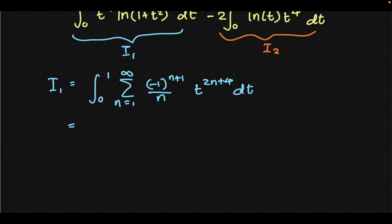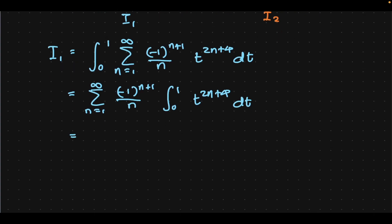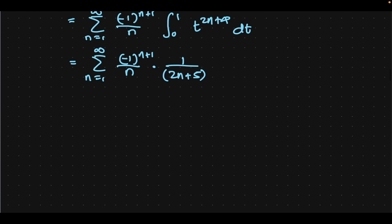There's nothing mysterious going on here — just interchange the sum and integration, and then evaluate. We can take the n dependence out completely, and then sum from n equals 1 to infinity of minus 1 to the n plus 1, over n, times 1 over 2n plus 5. Now we would like to use partial fraction decomposition right here, otherwise evaluating this infinite sum becomes a near impossible task.